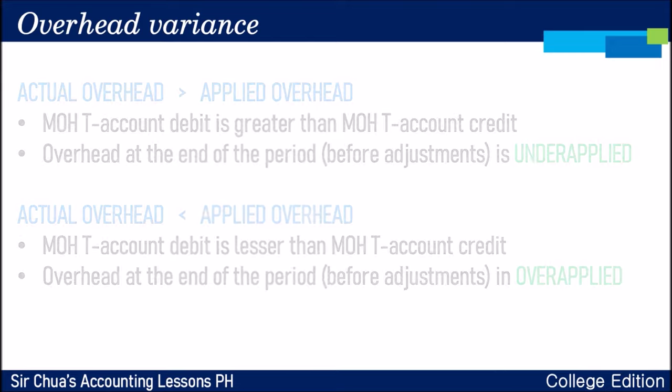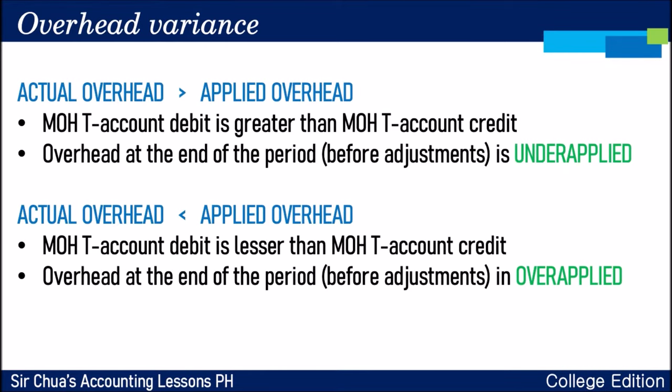When actual overhead is greater than applied overhead, the manufacturing overhead T-account debit is greater than the credit, and overhead at the end of the period is under-applied. We call it under-applied overhead variance when applied overhead is less than actual overhead. But if actual overhead is less than applied overhead, the T-account credit is greater than the debit, and overhead at the end of the period is over-applied — because applied overhead is larger than actual overhead.